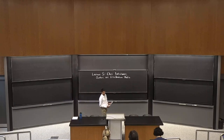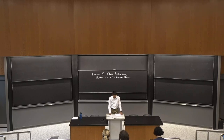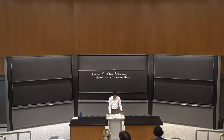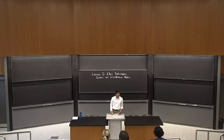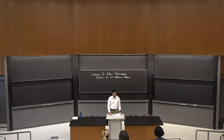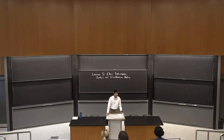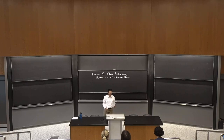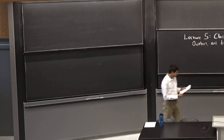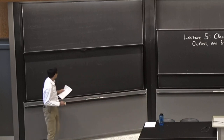Good afternoon everybody and welcome back to week two of Introduction to Data-Centric AI. In today's lecture we're going to cover three common problems present in real-world machine learning datasets: class imbalance, outliers, and distribution shift. I'm hoping for this lecture to be really interactive, almost more like a discussion than a lecture, so please feel free to shout out answers and ask lots of your own questions.